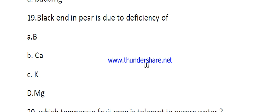Question number nineteen: blackend in pear is due to the deficiency of boron, calcium, potassium, or manganese? The right answer is calcium.